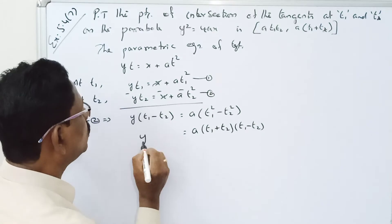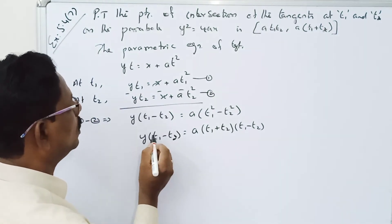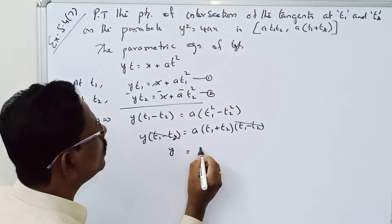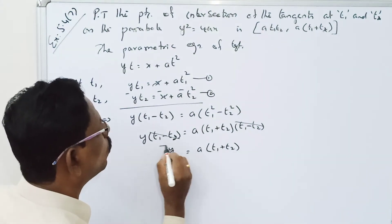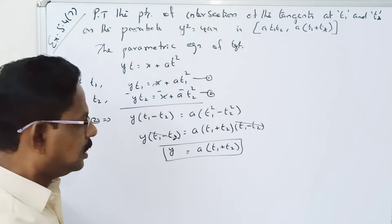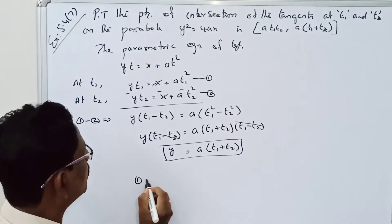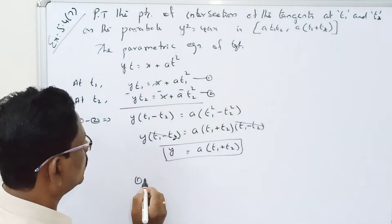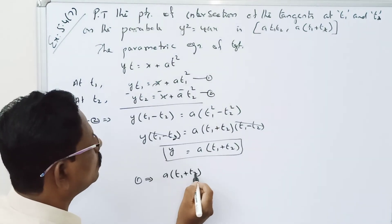The (t₁ − t₂) terms cancel on both sides, giving y = a(t₁ + t₂). Substituting this value of y into the first equation: a(t₁ + t₂) · t₁ = x + at₁².